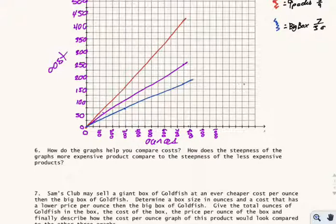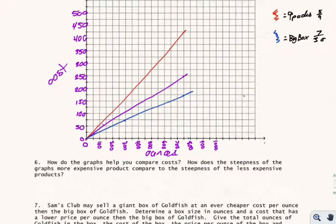Obviously the cost of the 9-pack box of goldfish is increasing much faster than the cost of the big box. The more big boxes of goldfish we buy, the more expensive it is, but it's not nearly as expensive as the 9-packs.